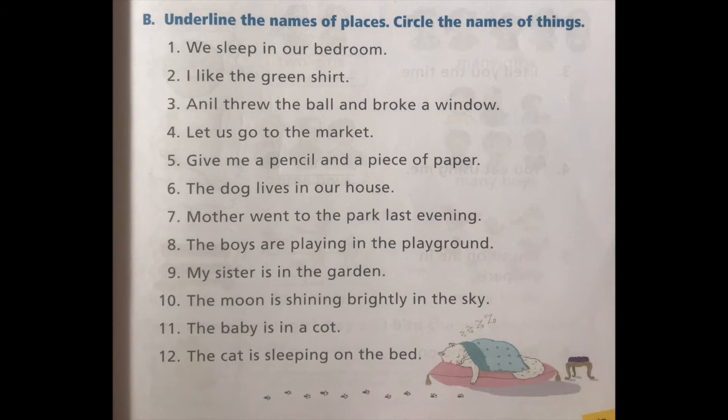Let's read question B: Underline the names of places and circle the names of things. So in the sentences below, if we find a name of a place we have to underline it, and if there is a name of a thing we have to circle it. Let's do it.